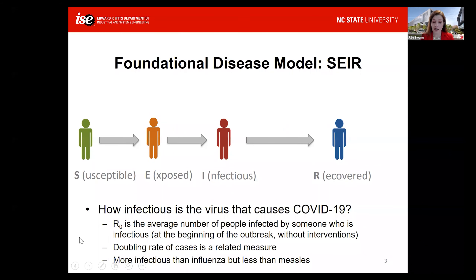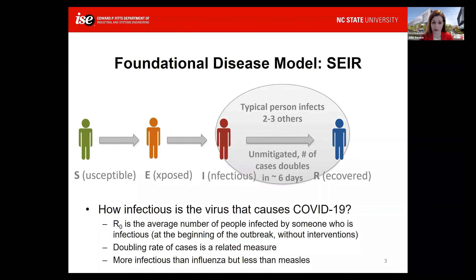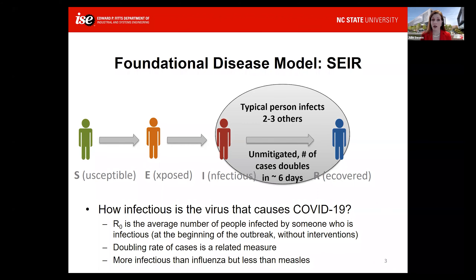The R0 for COVID-19 is thought to be between two and three, meaning someone who is infectious would infect on average two to three other people. This makes the virus more infectious than influenza but less infectious than measles. I also like to think of an R0 that may be specific to a community — the R0 for New York City may be different than the R0 for Raleigh — or even specific to a particular individual based on the activities they are undertaking.